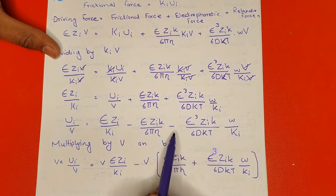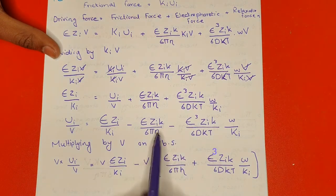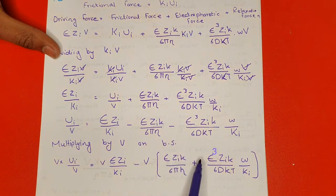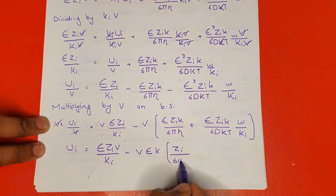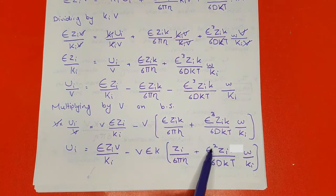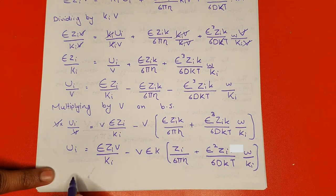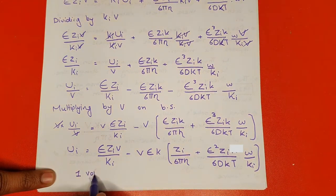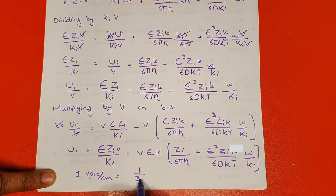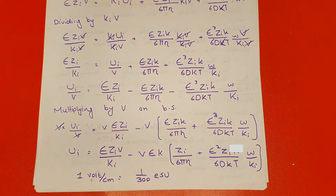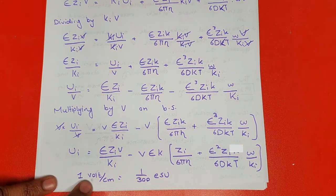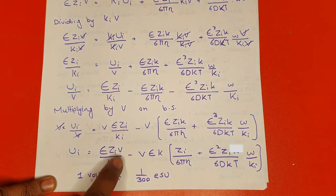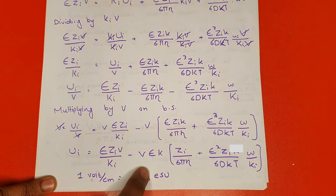Taking e as common leaves e² in that term. For the potential gradient, 1 volt per centimeter equals 1/300 esu. Substituting v = 1/300 into the equation to work in esu units.